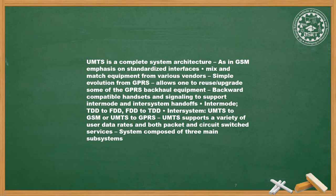UMTS is a complete system architecture. As in GSM, it emphasizes standardized interfaces allowing mix-and-match equipment from various vendors. Simple evolution from GPRS allows reuse or upgrade of some GPRS backhaul equipment, with backward-compatible handsets and signaling to support inter-mode and inter-system handoffs. Inter-mode refers to TDD to FDD or FDD to TDD; inter-system refers to UMTS to GSM or UMTS to GPRS. UMTS supports a variety of user data rates and both packet and circuit-switched services, and the system is composed of three main sub-systems.